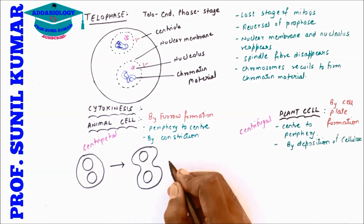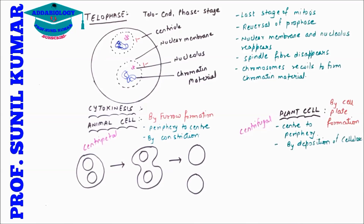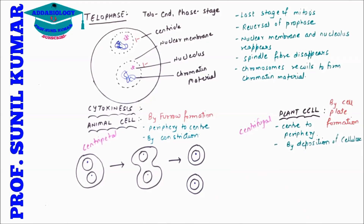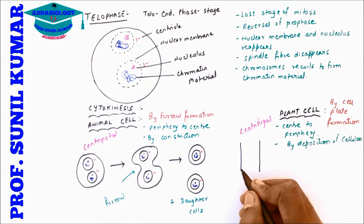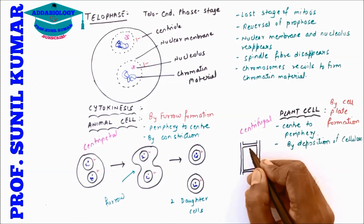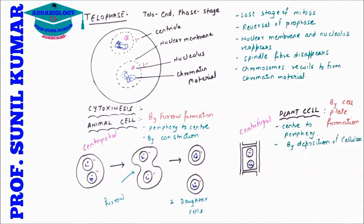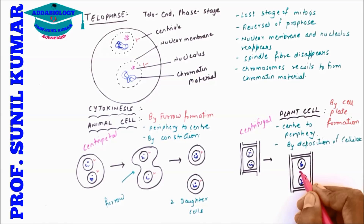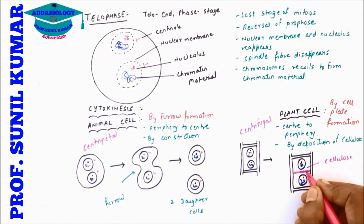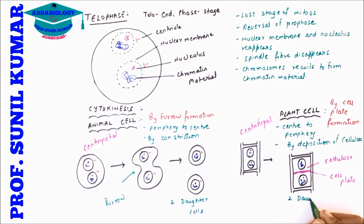In plant cells, cytokinesis starts from the center and moves towards the periphery by deposition of cellulose, which helps in cell plate formation — this is centrifugal movement. The two daughter nuclei are formed, and we get two daughter cells. In mitosis, both daughter cells have the same number of chromosomes as the parent cell. Remember: animal cell is centripetal with furrow formation; plant cell is centrifugal with cell plate formation.